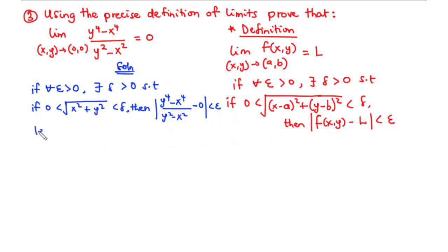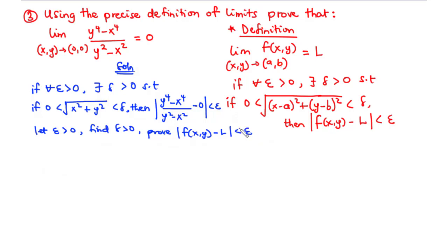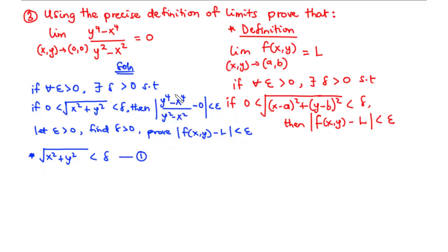We first let epsilon greater than 0, and then we are going to find delta greater than 0, and then prove that the absolute value of f(x, y) minus L is less than epsilon, where f(x, y) is this function. Let's start with the solution process. First of all, we are going to consider the part of the inequality where the square root of x² + y² is less than delta — we call this equation 1.